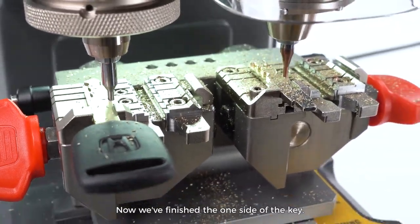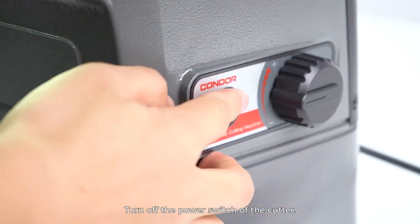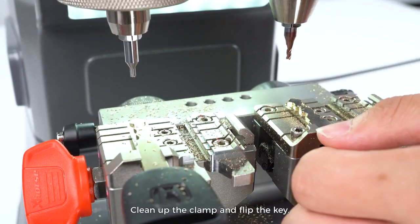Now we've finished one side of the key. Turn off the power switch of the cutter. Clean up the clamp and flip the key.